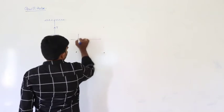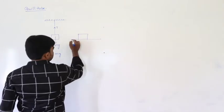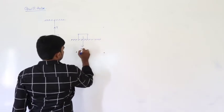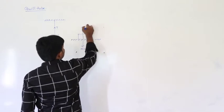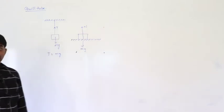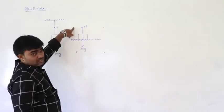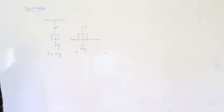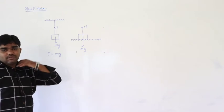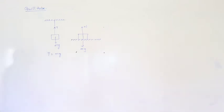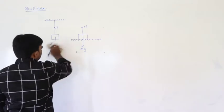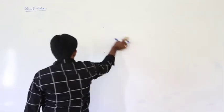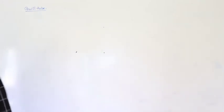For a body resting on a horizontal surface, the downward force is mg and the upward force is the normal force. If upward force equals downward force, the body is at rest. Net force acting on the body is zero, then the body is said to be in equilibrium.